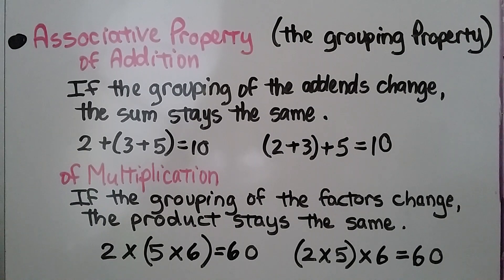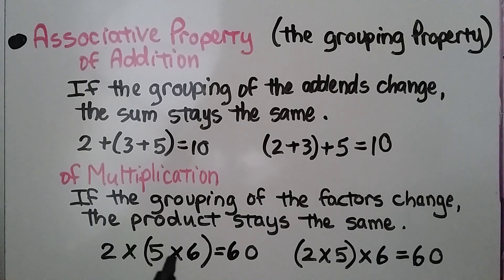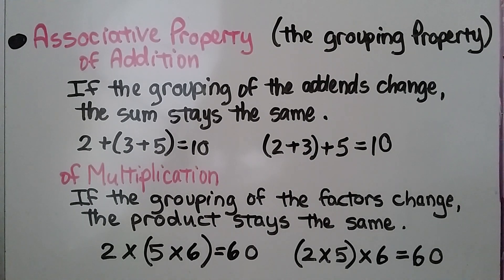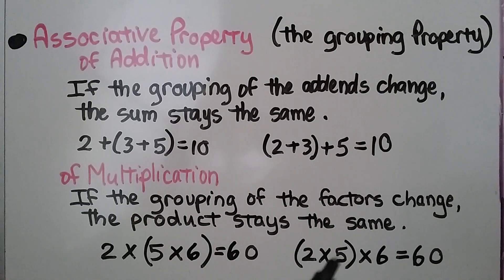The associative property of multiplication says if the grouping of the factors change, the product stays the same. So we can multiply 5 times 6, which is 30, then multiply 30 times 2, which is equal to 60. Or we can multiply the 2 and the 5 factors together — that's equal to 10 — and 10 times 6 is equal to 60. The product stays the same.